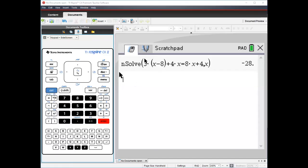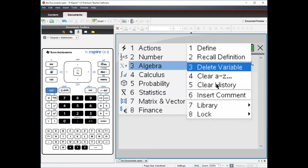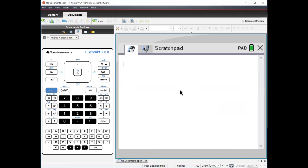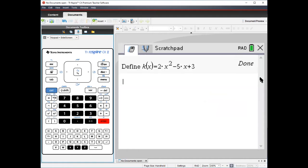I'm going to go to my calculator page and clear off this work from a previous problem. I'm going to type in define using the buttons down here. I want to define k(x) equals 2x² - 5x + 3, just like it appears on the page. And it says done.